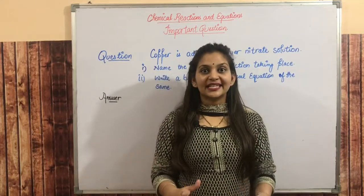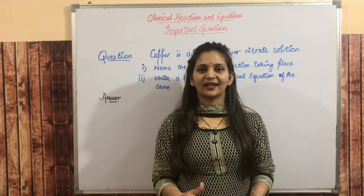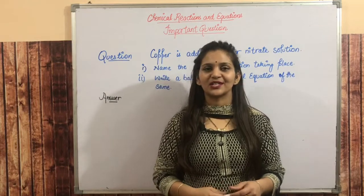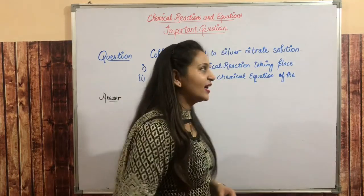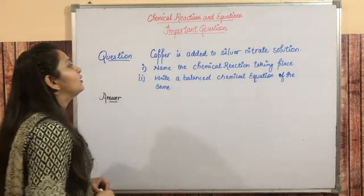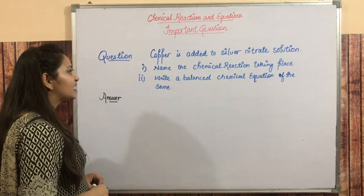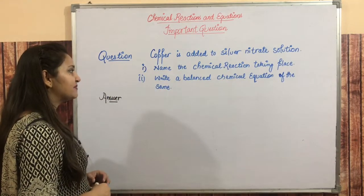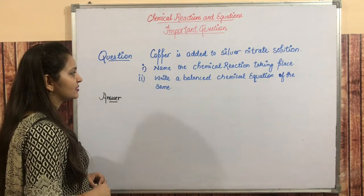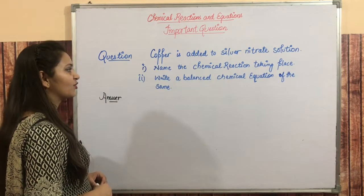Hi there, so yet another important question that is commonly asked in our examination. Let's see what this is. The question is: Copper is added to silver nitrate solution. Name the chemical reaction taking place and write a balanced chemical equation of the same.